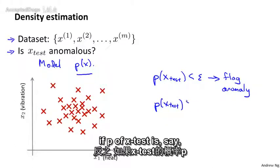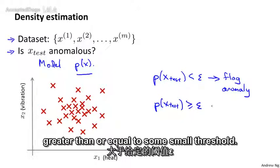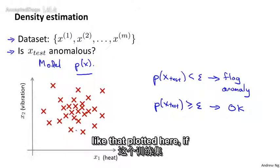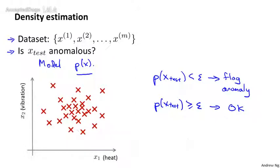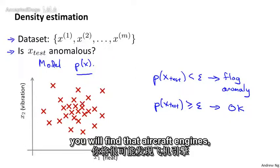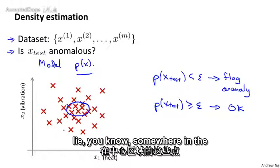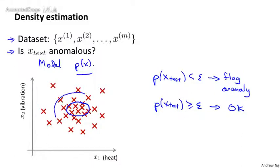Whereas if P of X test is greater than or equal to some small threshold, then we say that it looks okay. And so given a training set like that plotted here, if you build a model, hopefully we'll find that aircraft engines, hopefully the model P of X will say that points that lie somewhere in the middle, that's pretty high probability.